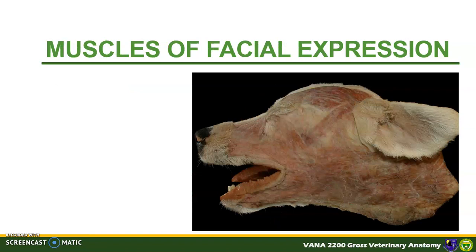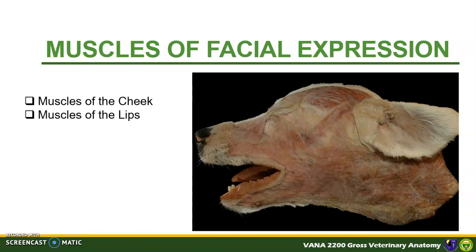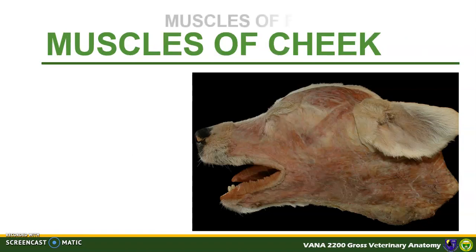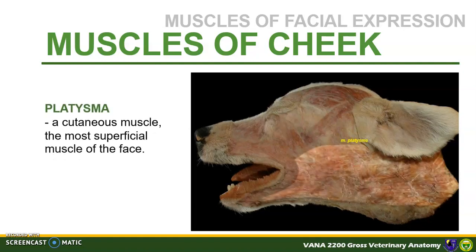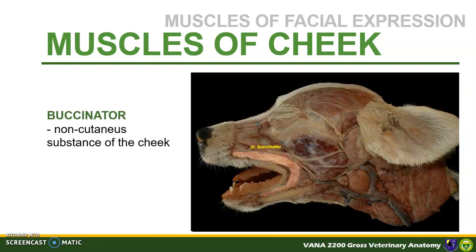The muscles of facial expression or the mimetic muscles are generally thin cutaneous muscles innervated by the facial nerve. They can be further subdivided into muscles of the cheek, lips, forehead, and the eyelid. There are two muscles of the cheek responsible for the dog's facial expression. First is the platysma — a relatively well-developed sheet of cutaneous muscle that draws the angle of the mouth caudally. It originates at the dorsal raphe of the neck and inserts at the commissure of the lips. The second is the buccinator, a thin wide sheet of muscle that forms the non-cutaneous substance of the cheek, whose contraction draws the cheek inward against the teeth.